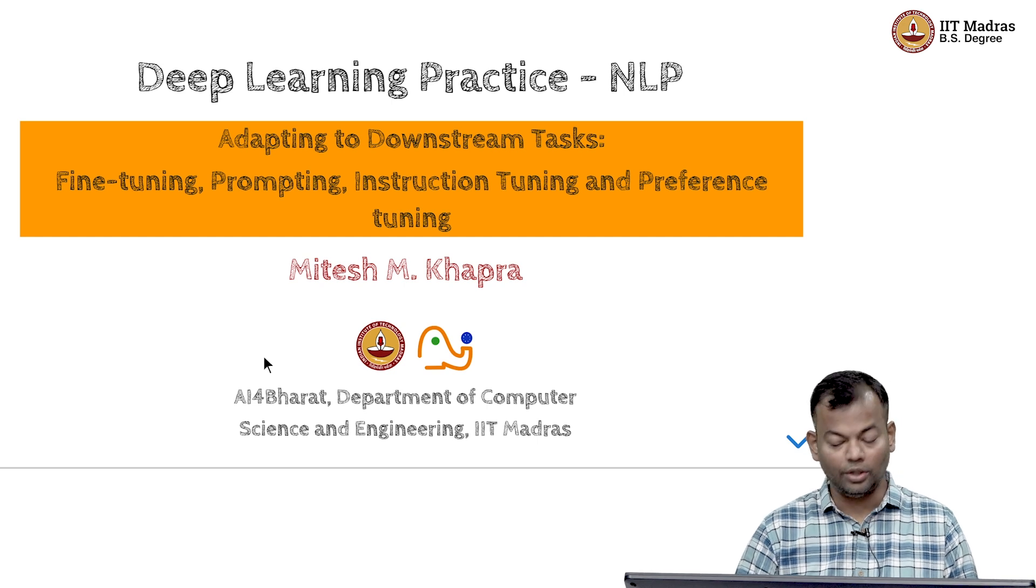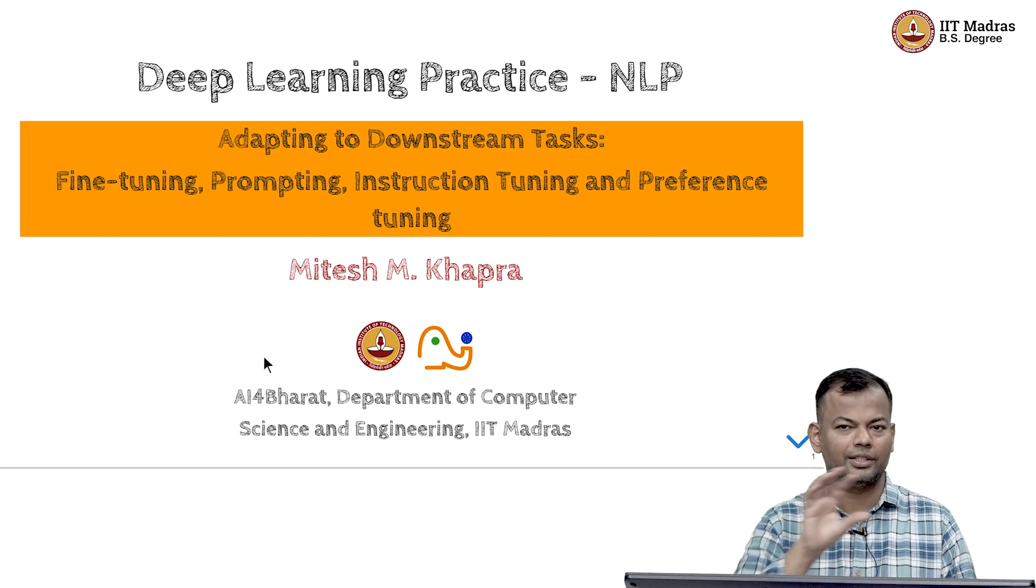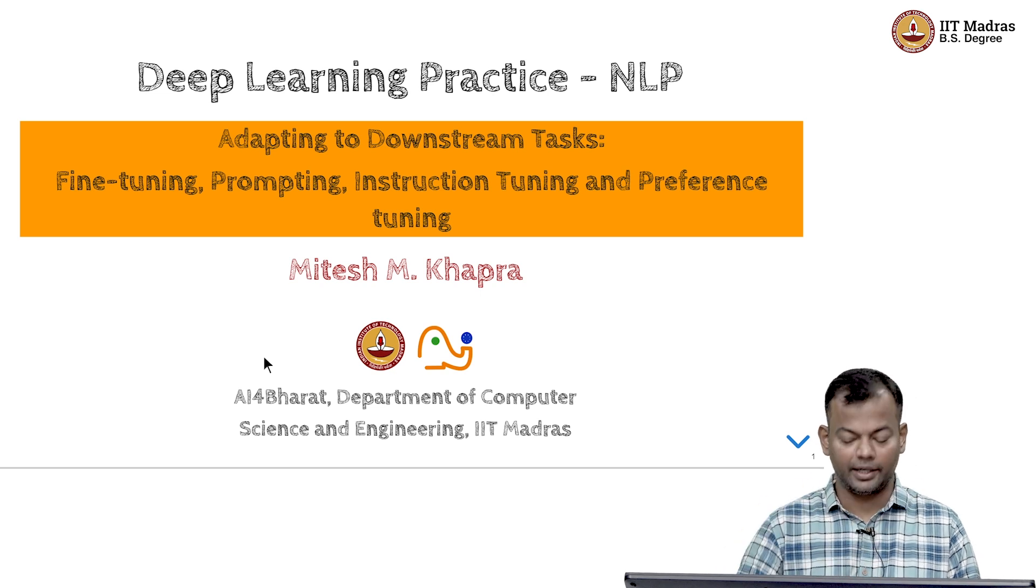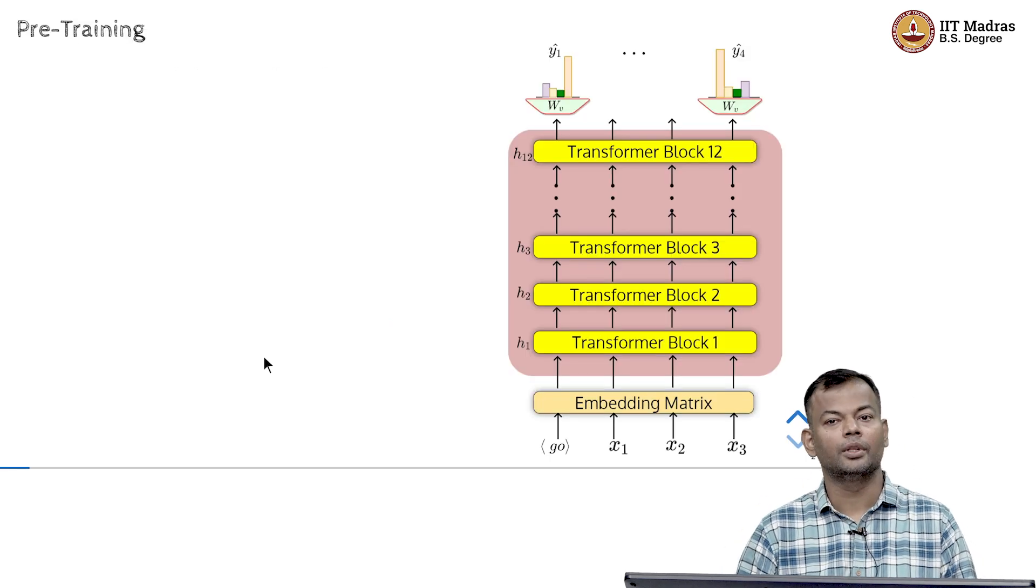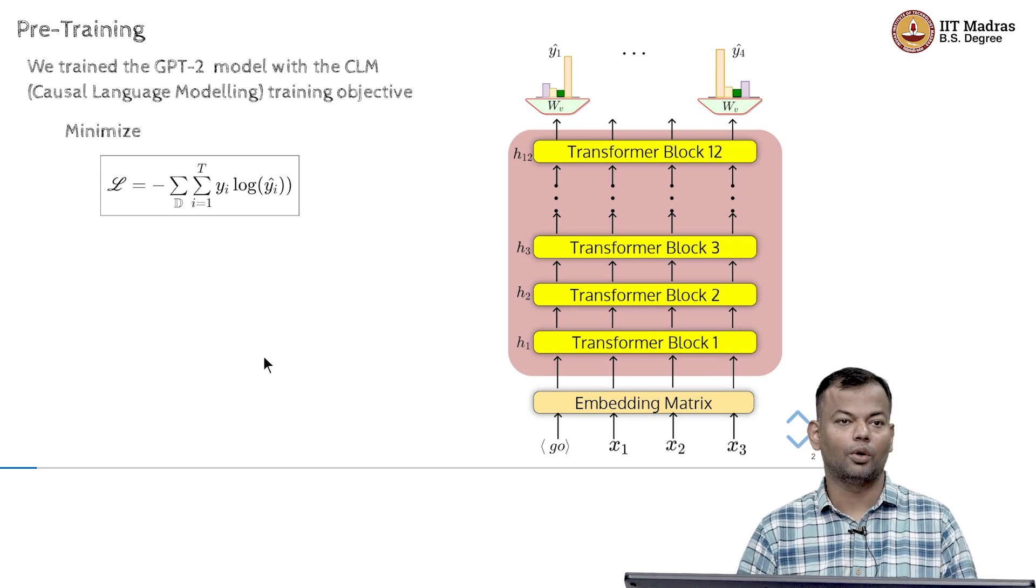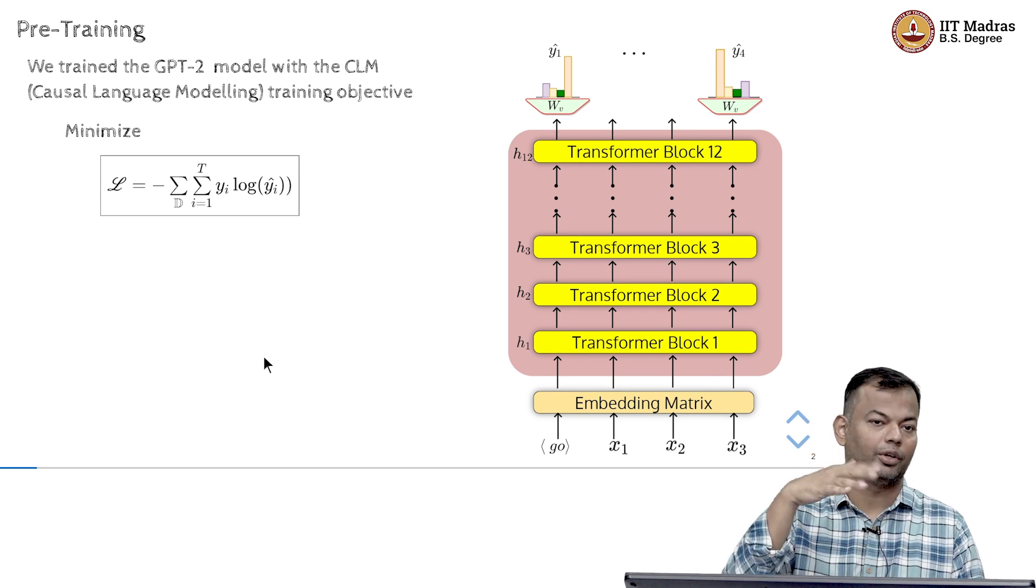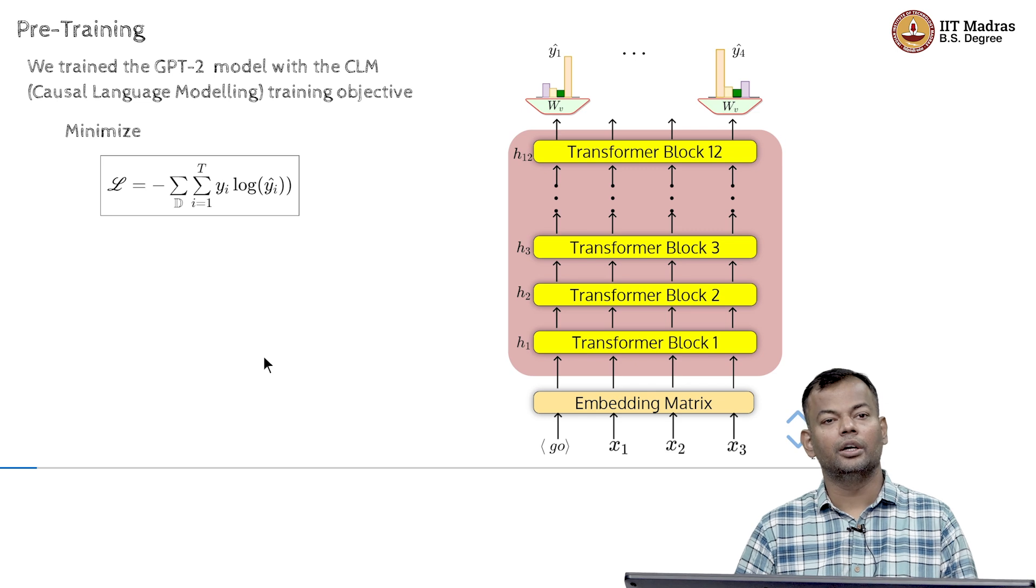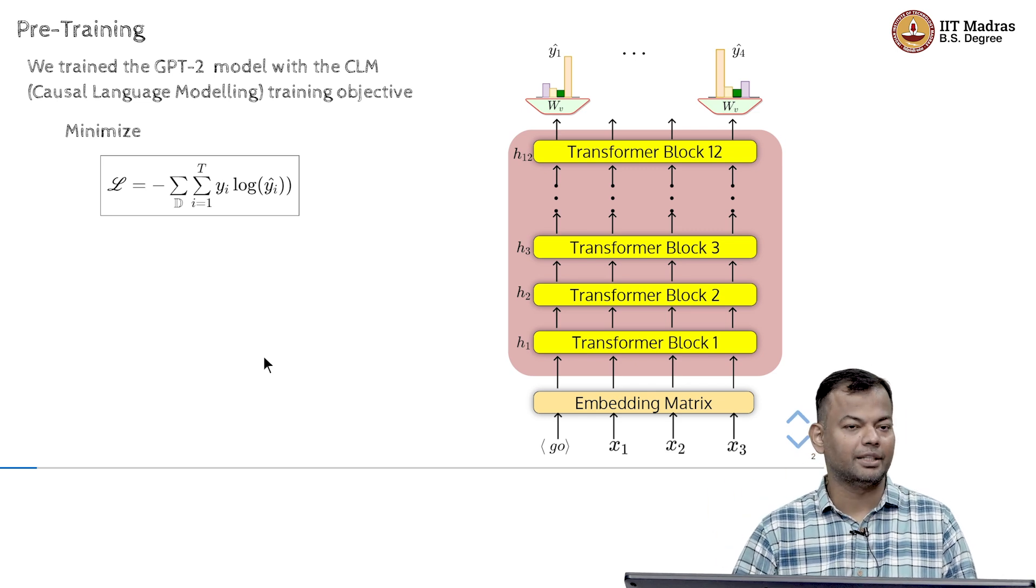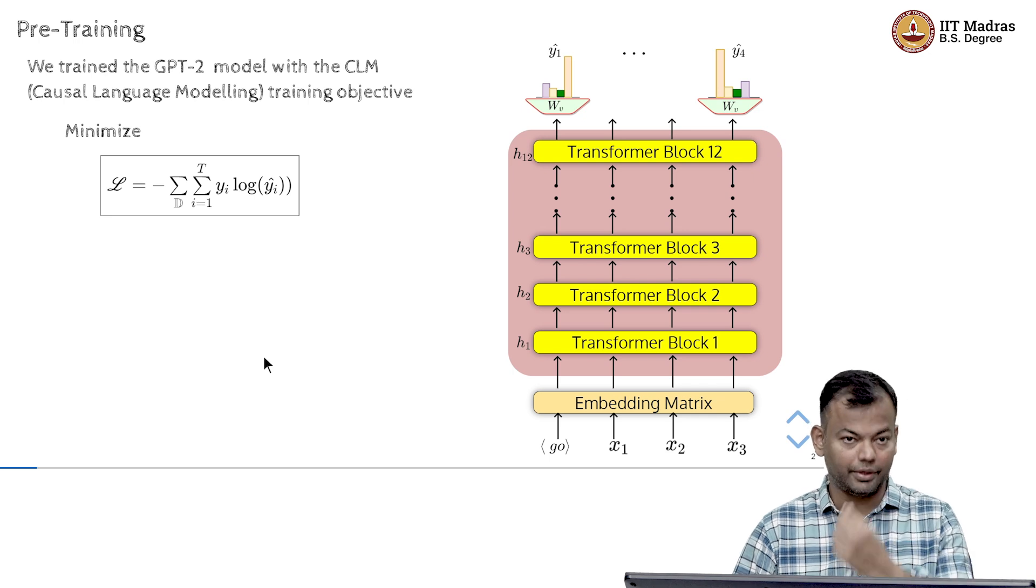So, let us see what this means and let us look at some sort of theory or context before we get into the hands-on part. So, we have looked at pre-training. We trained the GPT-2 model with the causal language modeling objective and for all samples in the dataset, we sort of minimize the negative log likelihood.